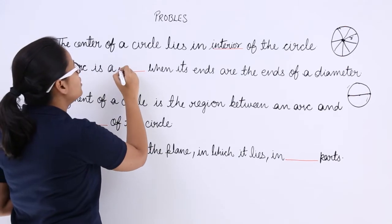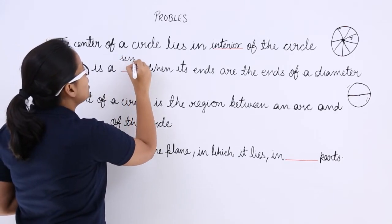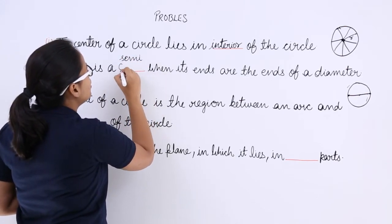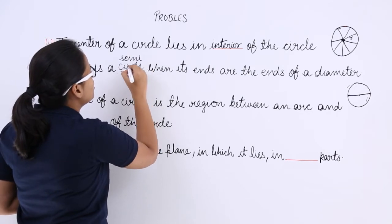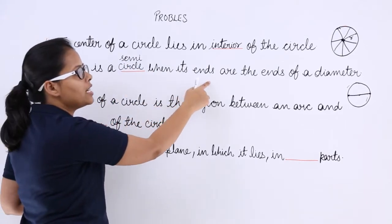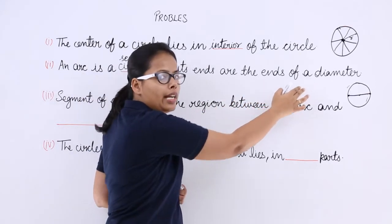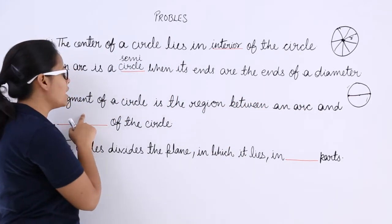So an arc is a, you can write here, semi-circle. An arc is a semi-circle when its ends are the ends of a diameter. Now let's see the third problem.